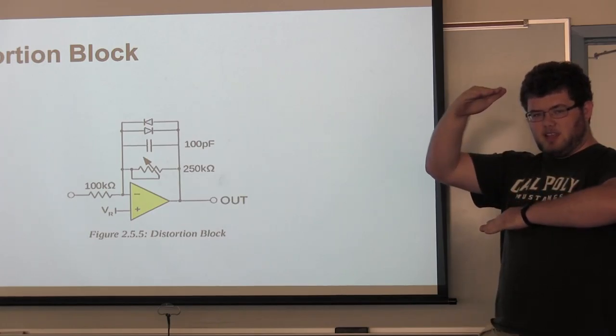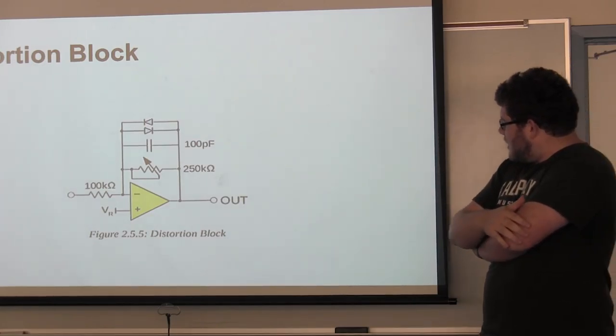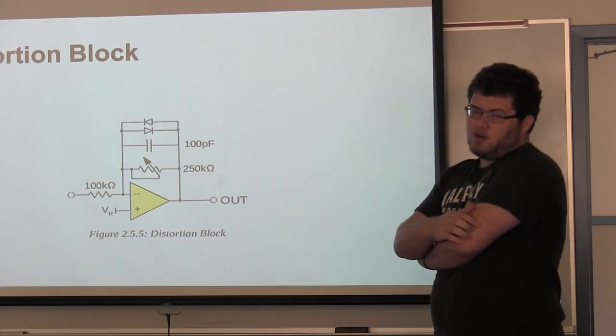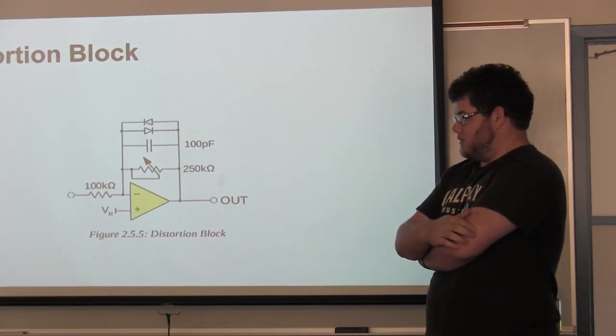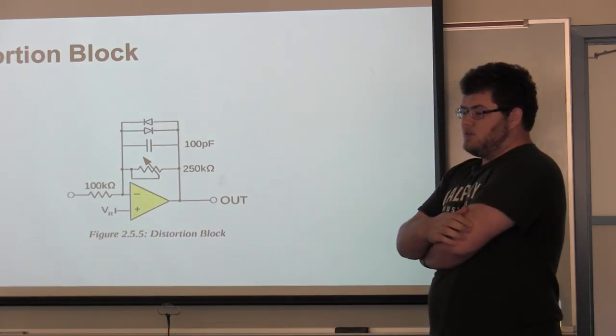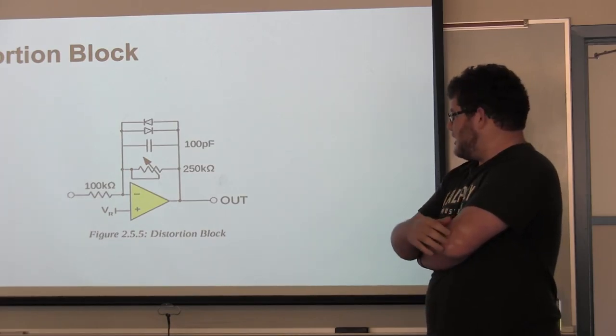That is the distortion block. It's an amplifier with two diodes that clip the top and bottom of the audio signal and it amplifies again for distortion.